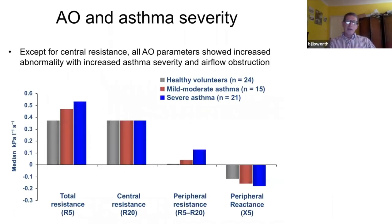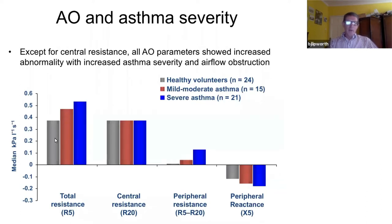What's the relationship between asthma severity and airway oscillometry measures? This is a study that we published with Peter Williamson, who now works in Perth, nine years ago. We compared healthy volunteers shown in grey, mild to moderate asthma in red, and severe asthma in blue.